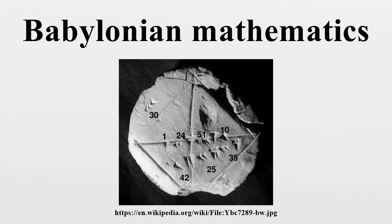The Babylonians used pre-calculated tables to assist with arithmetic. For example, two tablets found at Senkara on the Euphrates in 1854, dating from 2000 BC, give lists of the squares of numbers up to 59 and the cubes of numbers up to 32. The Babylonians used the lists of squares together with formulae to simplify multiplication. They did not have an algorithm for long division. Instead they based their method on the fact that, together with a table of reciprocals, numbers whose only prime factors are 2, 3, or 5 have finite reciprocals in sexagesimal notation, and tables with extensive lists of these reciprocals have been found.